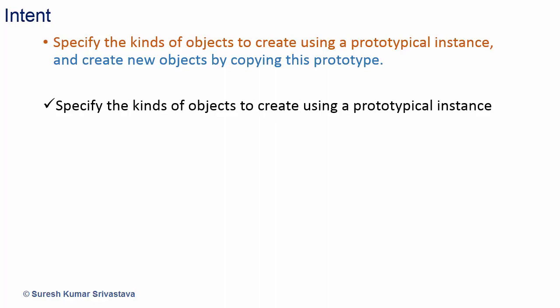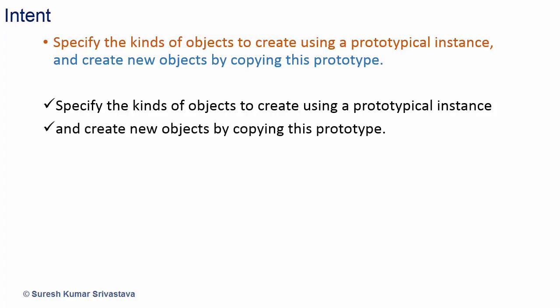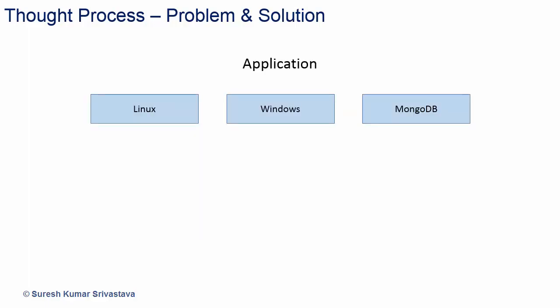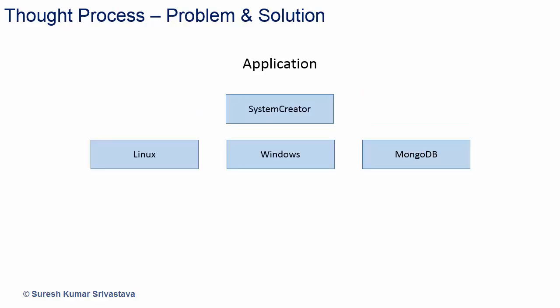We specify the kinds of objects to create using a prototypical instance and create new objects by copying this prototype. Let's have a thought process for a problem and how we will come up with the solution. We have an application that requires creating objects of Linux, Windows, and MongoDB. It is simple — we can have a system creator which will create these objects.